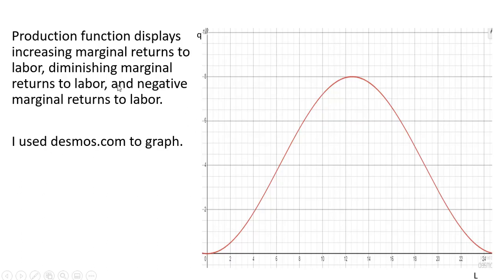So the graph of this production function will look like this. This production function displays increasing marginal returns to labor, diminishing marginal returns to labor, and then this negatively sloped section. Here we have negative marginal returns to labor. I use the following website to graph this function.